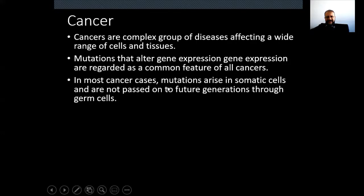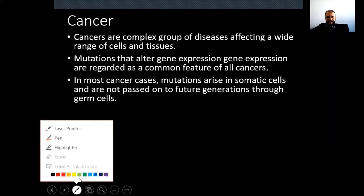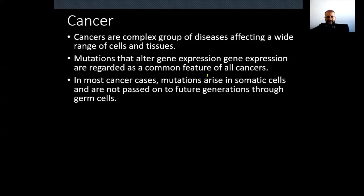In most cancer cases, mutations arise in somatic cells, and they are not passed on to future generations through germ cells. There are two important terms to notice: somatic cells and germ cells. Somatic cells are our body cells. Germ cells are gametes. Cancers usually arise because of mutations in somatic cells.